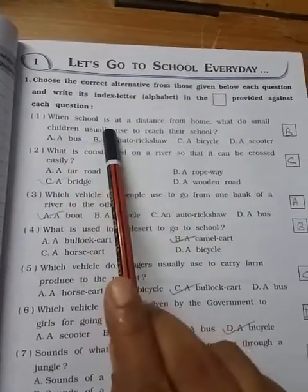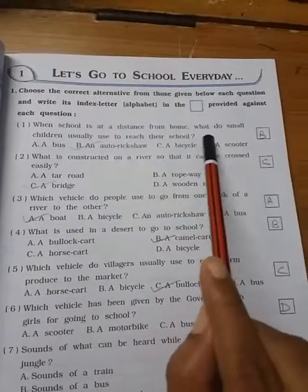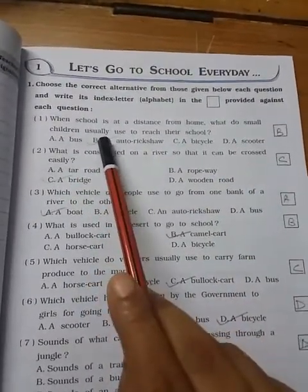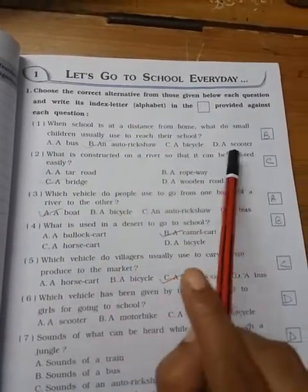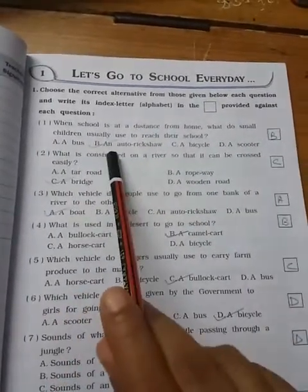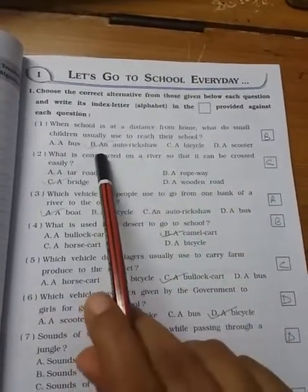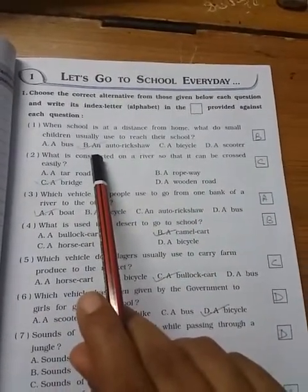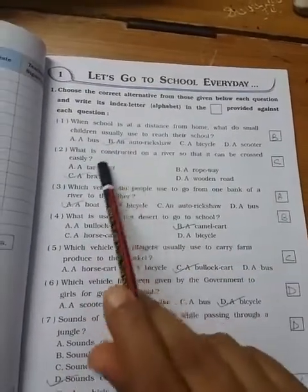The first one is when school is at a distance from home, what do small children usually use to reach their school? So A, B, C, D options are given: a bus, an auto rickshaw, a bicycle, or scooter. So children are used to go because they do not know how to drive. So the auto rickshaw will help to reach. The answer is B.